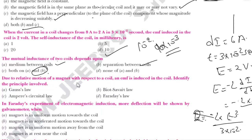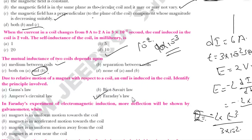Next question: Due to relative motion of a magnet with respect to a coil, an EMF is induced in the coil. This is identified as Faraday's law — if there is relative motion between the magnet and the coil, an EMF is induced.